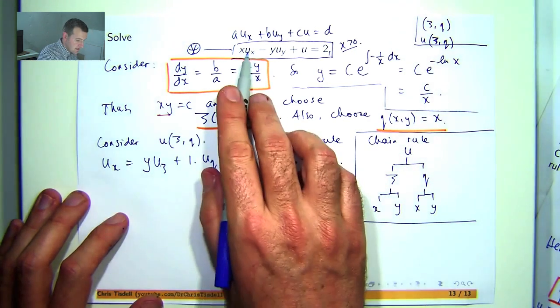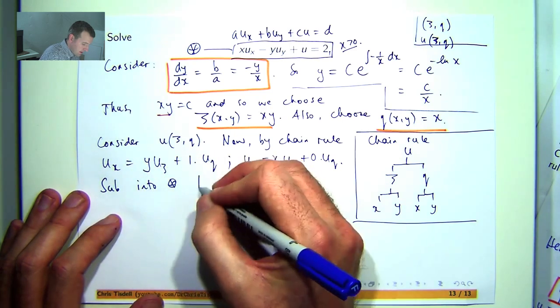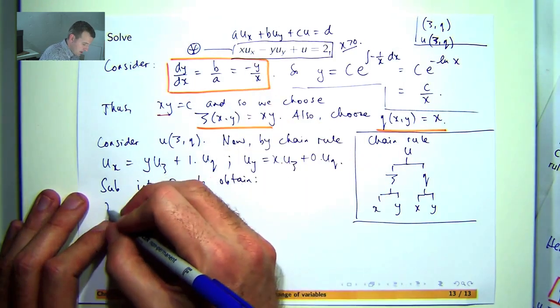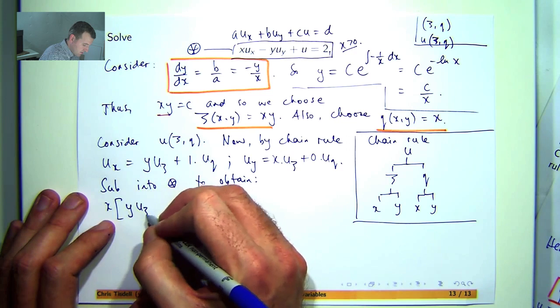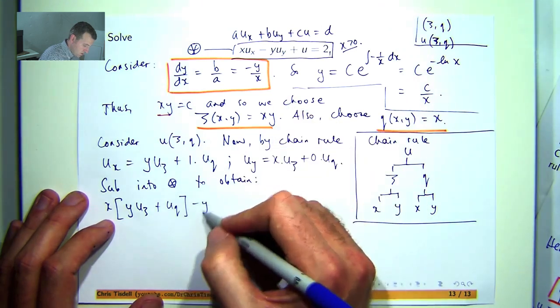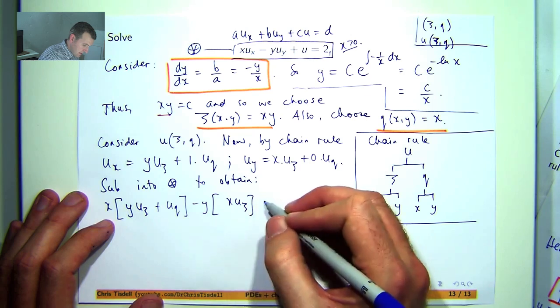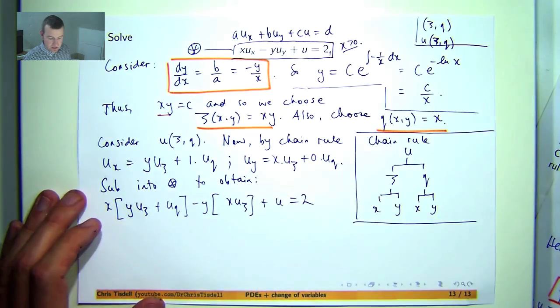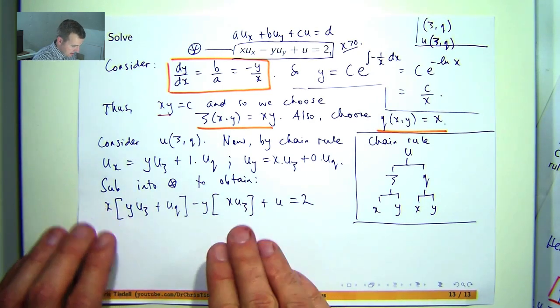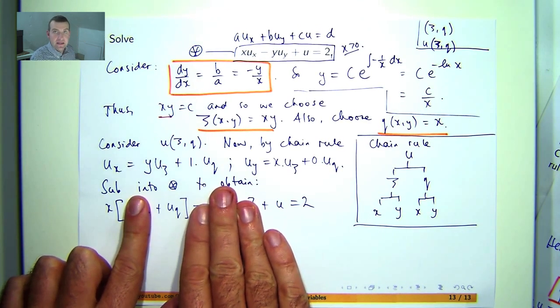Let's take these expressions, sub them into star, and hopefully there's some cancellation occurring. So I've got x times u sub x plus y times u sub y plus u equals 2. Now you can see if I expand these terms out, the first term will cancel with this term.